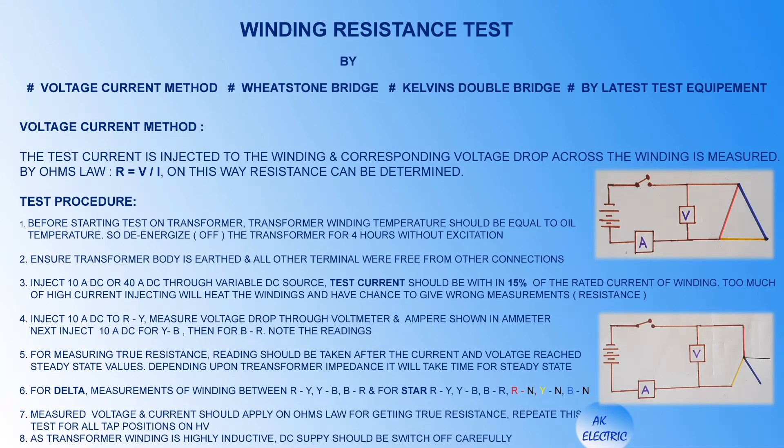Winding resistance test by voltage-current method: the test current is injected to the windings and the corresponding voltage drop across the winding is measured. By Ohm's law, R equals V divided by I — on this way resistance can be determined.